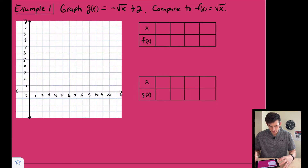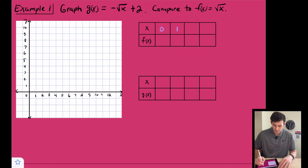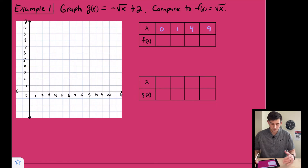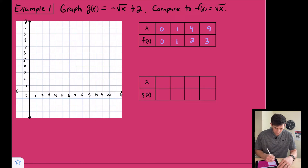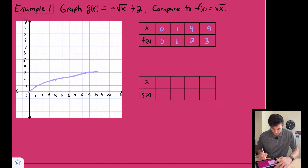For the parent function, let's graph that quickly. We choose values we can take the square root of — perfect squares — so I'll use 0, 1, 4, and 9. The square root of 0 is 0, square root of 1 is 1, square root of 4 is 2, and square root of 9 is 3. So we plot (0,0), (1,1), (4,2), and (9,3) — there's the parent function.